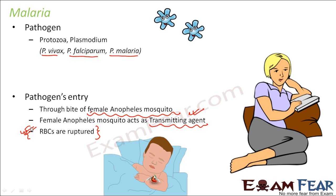Malaria becomes very severe in certain cases. If diagnosed at a very initial stage, the treatment is quite simple. But if it becomes too severe, it can become fatal because the red blood cells gradually keep on getting ruptured.